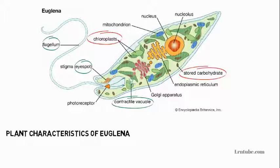Euglena is a very tough organism — although microscopic, it can behave both as a plant and as an animal. This is always a common exam question in biology: which organism can behave both as a plant and an animal? Learn the animal characteristics, the plant characteristics, and know which kingdom it belongs to — it is a protist, not a fungi. Know the kingdom, know the characteristics, and know the examples, and you are covered when it comes to Kingdom Protista.